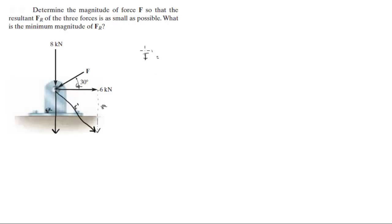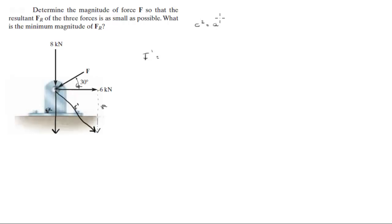You could do some law of cosines or whatever it is that you want to do, but the easiest way is a simple Pythagorean theorem, which states that C squared is equal to A squared plus B squared, which means that F' is equal to...